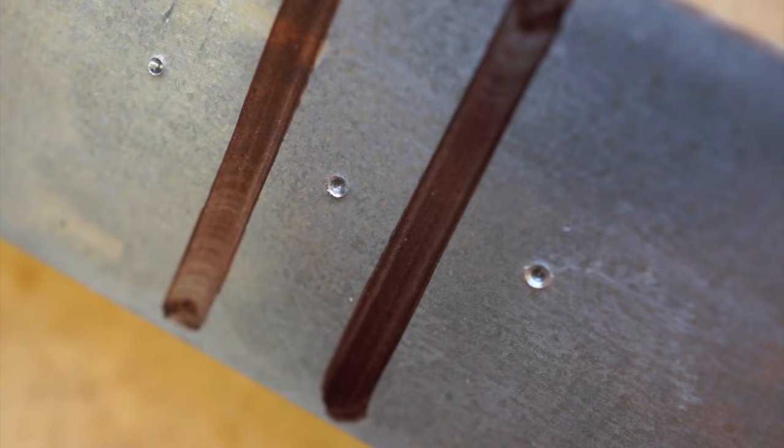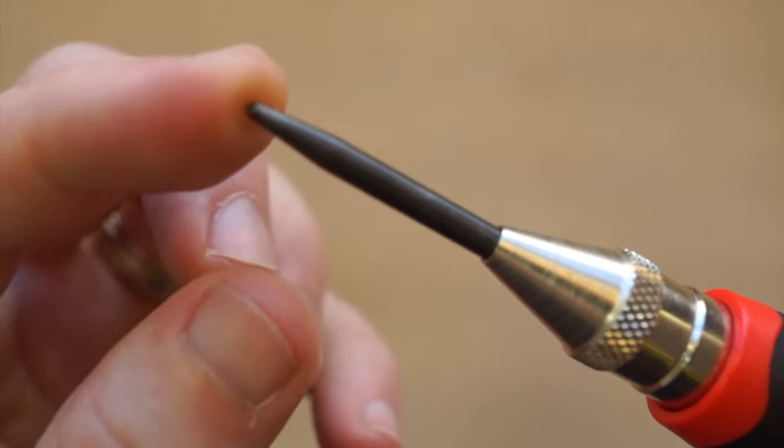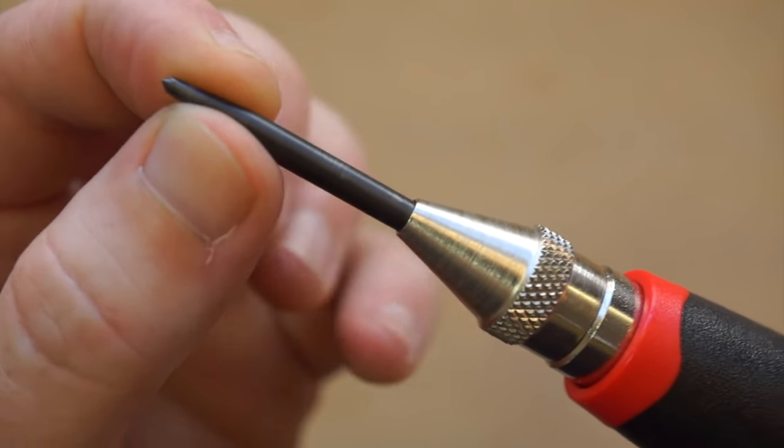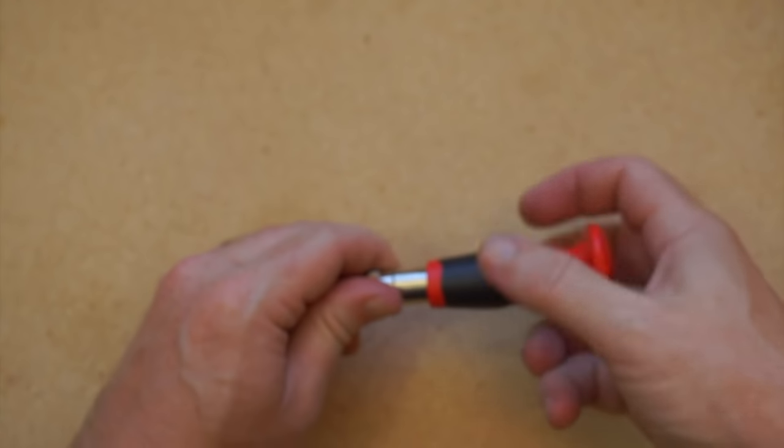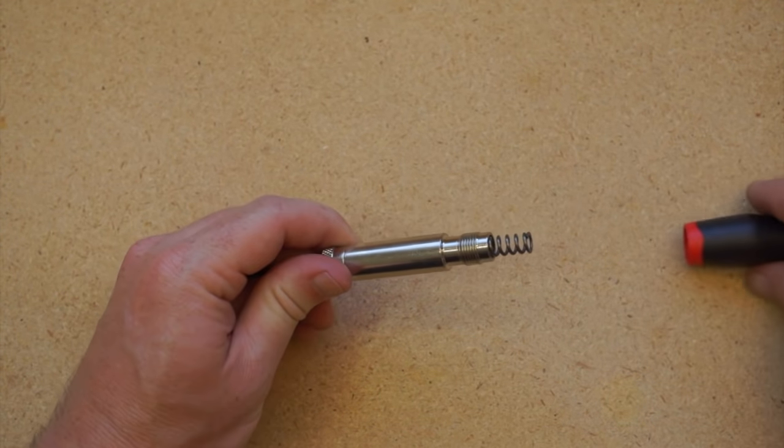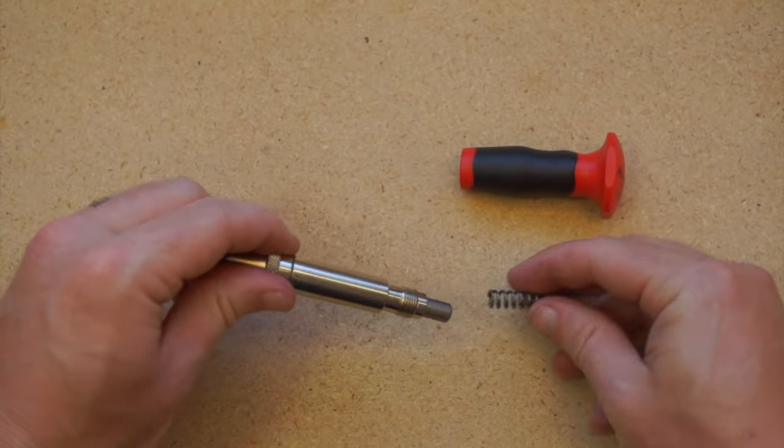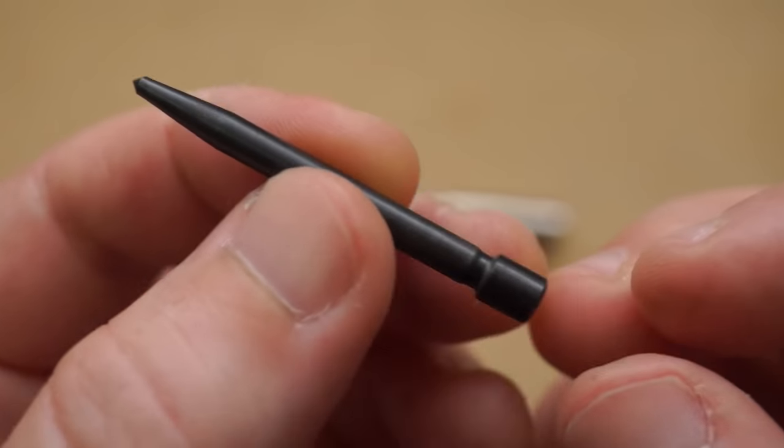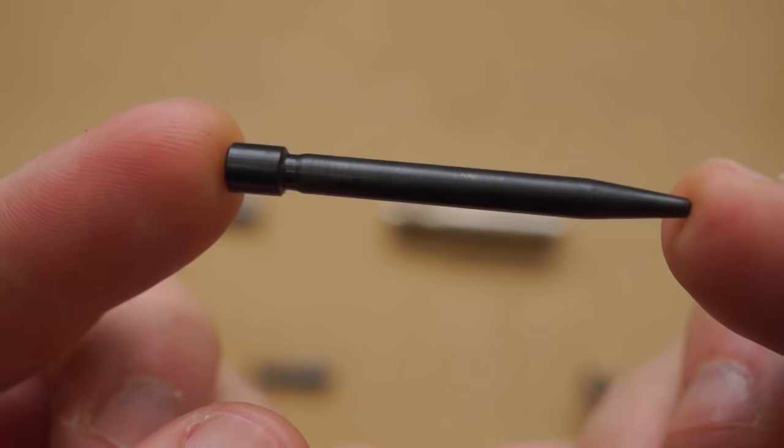Now even the best punch is going to get dull at some point. I suspect this pin will last much longer than the $5 punch, but I still don't want to buy a $30 tool more than once if I can help it. Fortunately, Rennsteig sells replacement pins you can get online for about $7 to $10.